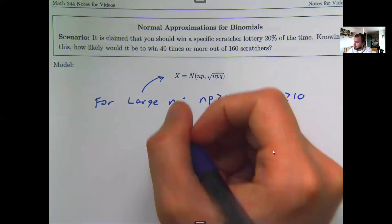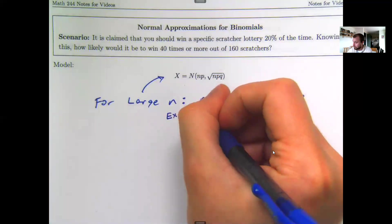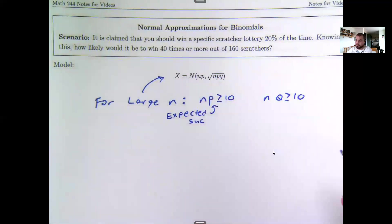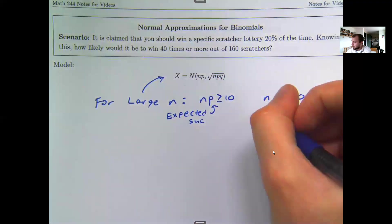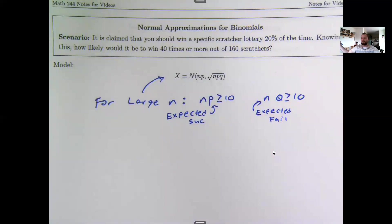n times p, this is the expected number of successes, so ideally I should expect 10 or more successes. And n times q, this is expected number of failures. So requiring both of these things to be bigger than 10 is essentially the same as making sure I have enough blocks on both sides of this bell curve to make it look nice and smooth.